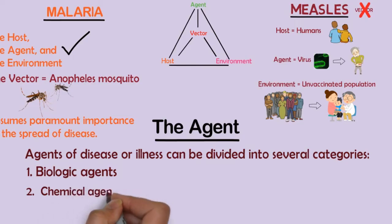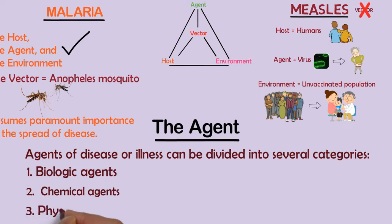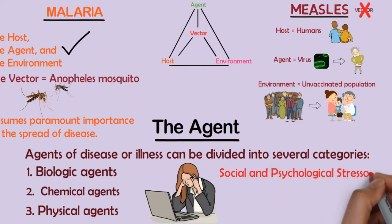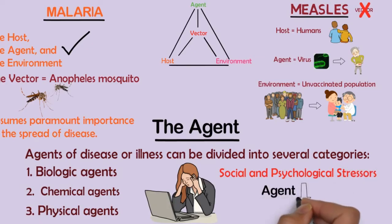Second, chemical agents, including chemical toxins such as lead, and dusts, which can cause acute or chronic illness. Third, physical agents, including kinetic energy — for example, bullet wounds, blunt trauma, and crash injuries — as well as radiation, heat, cold, and noise. Epidemiologists are now studying the extent to which social and psychological stressors can be considered agents in the development of health problems.